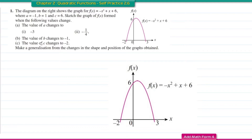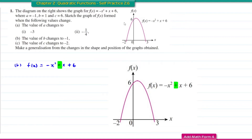Question b: the value of b changes to -1. The function we want to sketch is f(x) = -x² - x + 6. The difference between these functions is the value of b — one is -1 and the other is +1.